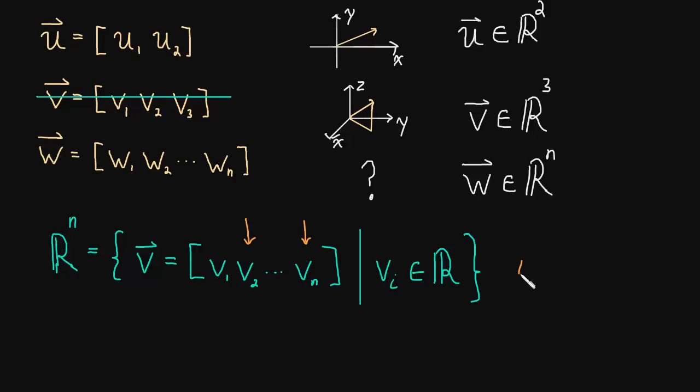It just means that every single one of these components is a real number. So it's kind of implied here that i is going from 1 all the way to n. Meaning that we're considering every single component, v_1 all the way through v_n. And each one of them is a real number. So they can't be complex numbers, for example.